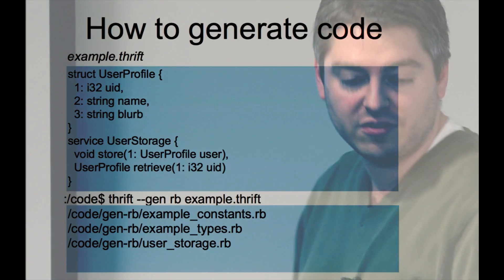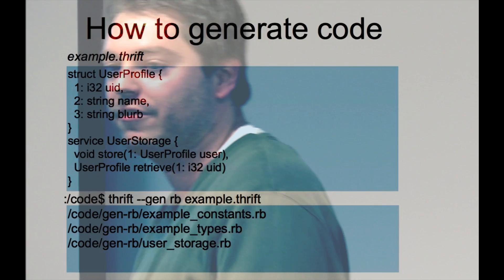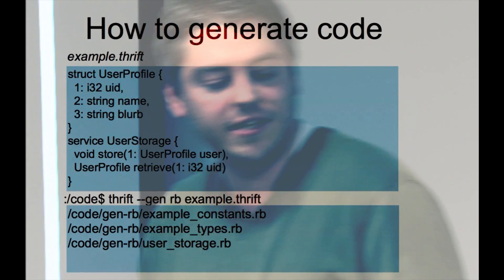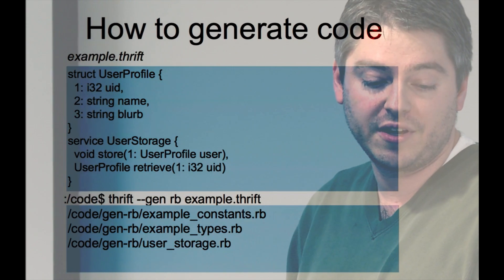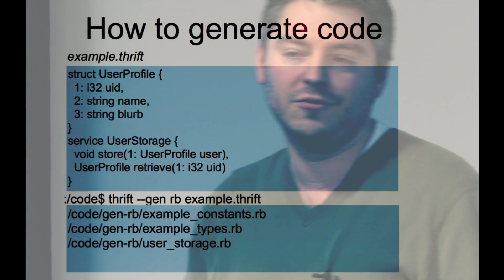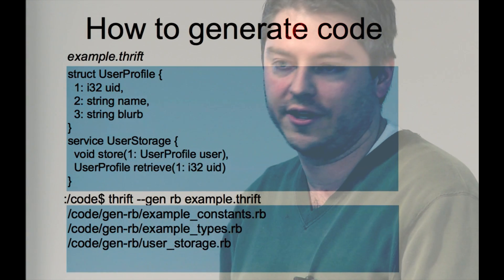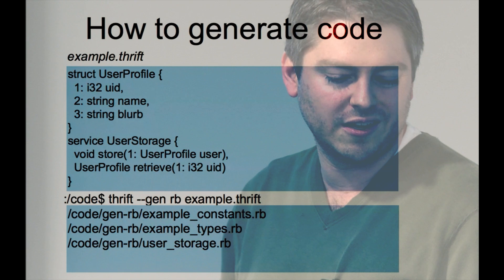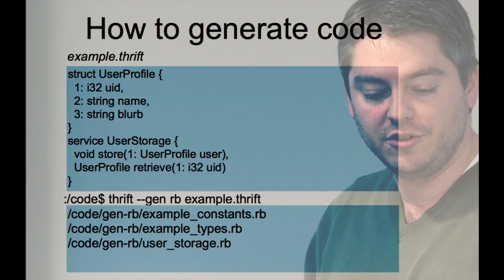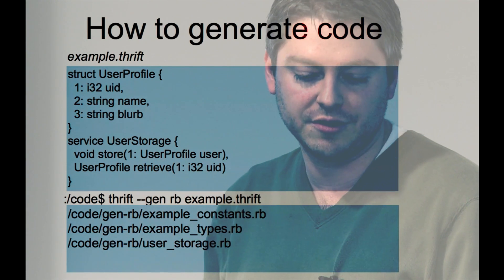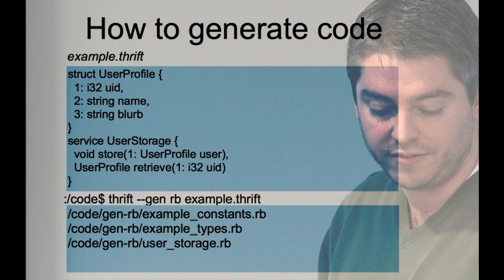Here is a real quick example. The Thrift file ends in a .thrift extension and this defines what your communication is going to look like. You can set up structures and enums. You can create custom objects and it supports built-ins like strings, arrays, sets, floats, and different size integers. You create all the structures and you create a service that defines all your functions, and the service uses the structures you previously defined.